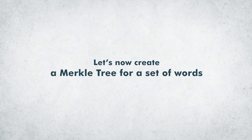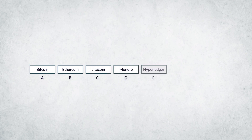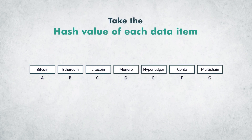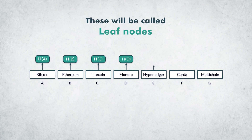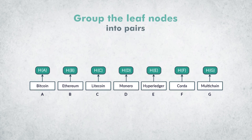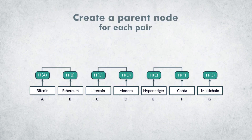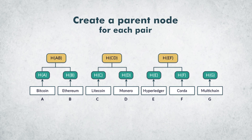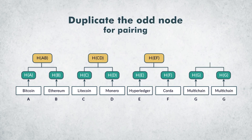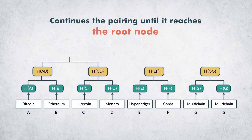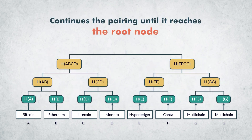Let's now create a Merkle tree for a set of words. Let's assume a list of blockchain names. Take the hash value of each data item — these will be called the leaf nodes. Now group the leaf nodes into pairs, and create a parent node for each pair. Since we have an odd number of data items, the multichain node does not have a pair; therefore it duplicates the node and does the pairing. It continues the pairing until it reaches the root node.